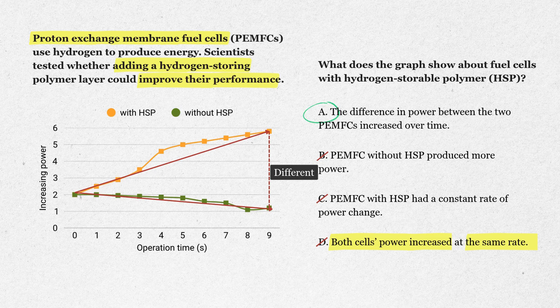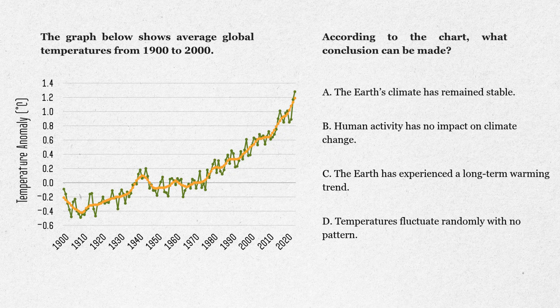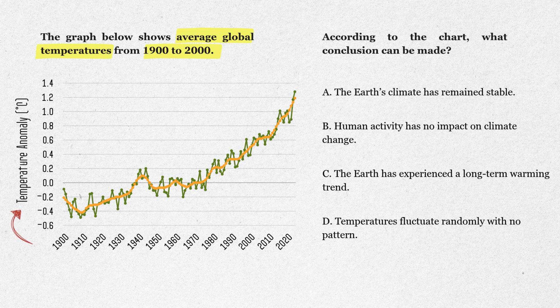Let's break down this line graph question. The graph shows average global temperatures from 1900 to 2000. Look at the y-axis — it's labeled temperature anomaly in degrees Celsius. That just means how much the temperature differs compared to a baseline. Notice the trend: starting in 1900, values are below zero, but as time goes on, especially after 1970, the line steadily rises.